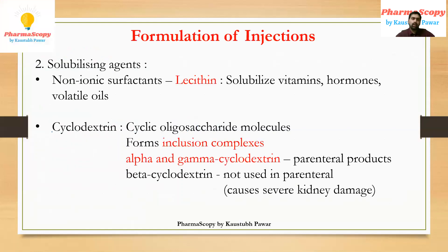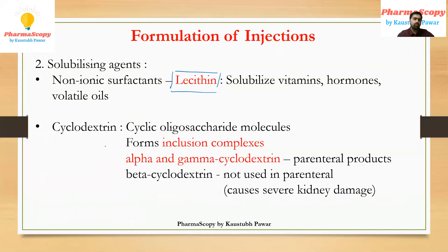Moving to the next formulation aspect — solubilizing agents. We need to solubilize the drug in our formulation; if it is an emulsion we require an emulsifying agent, if a suspension we require suspending agents. The most important and widely used solubilizing agent is the non-ionic surfactant lecithin, because lecithin is biocompatible and one form is present in our lungs. It is used to solubilize vitamins, hormones, volatile oils, and many more drugs.